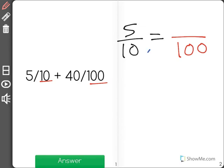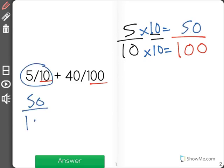I know to get from 10 to 100 I had to multiply by 10, so I have to do the same on the top to find out that 5 tenths over here is equal to 50 out of 100.